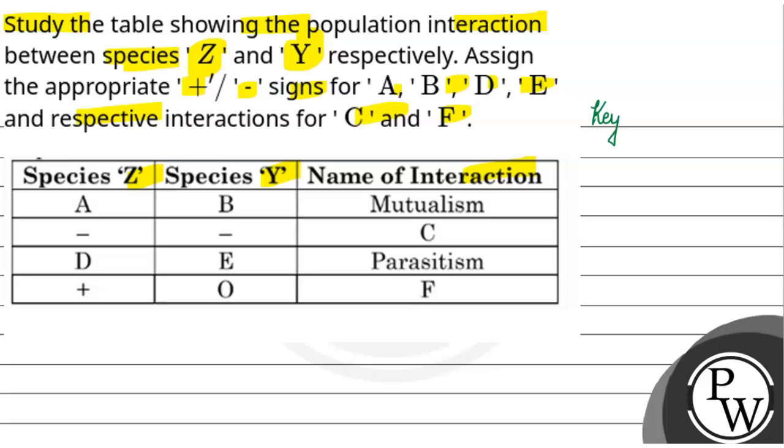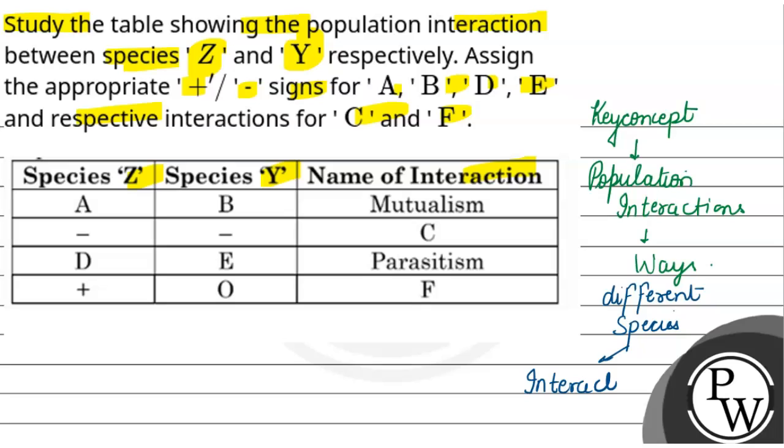If we talk about the key concept here, population interactions refer to various ways in which different species interact within an ecosystem.